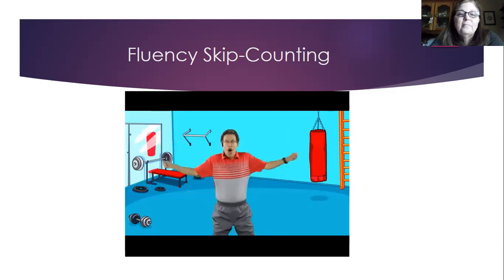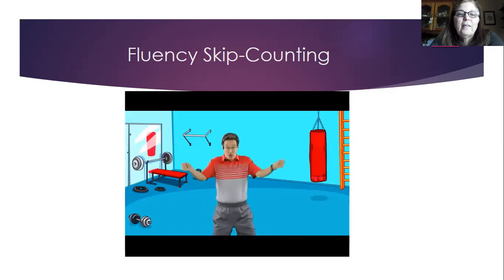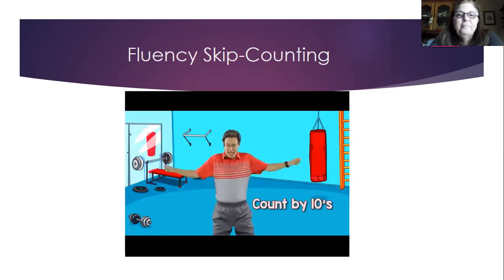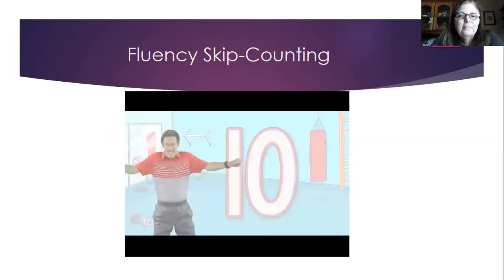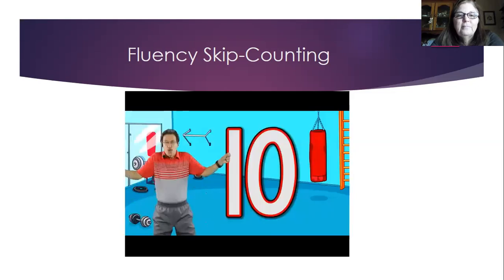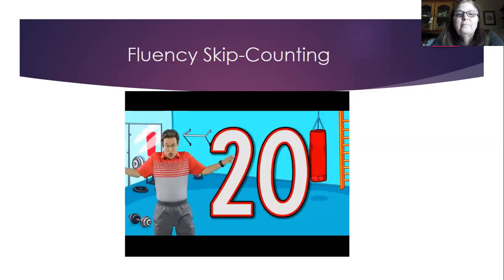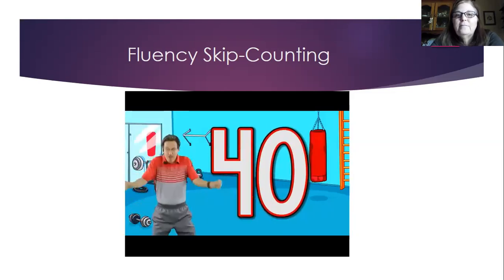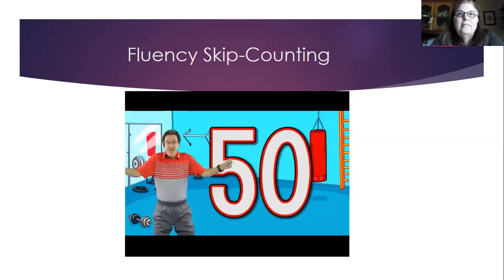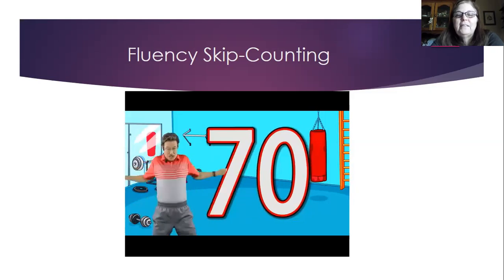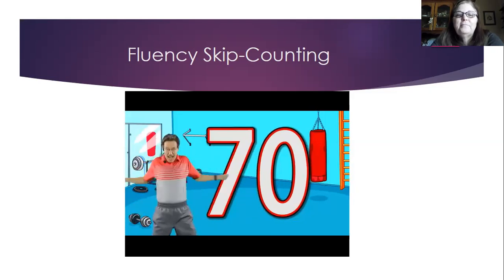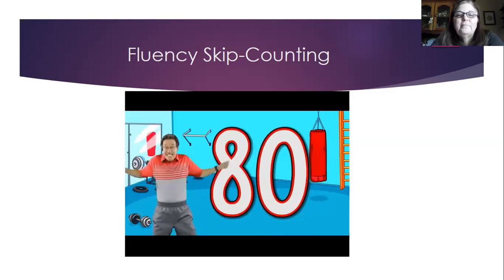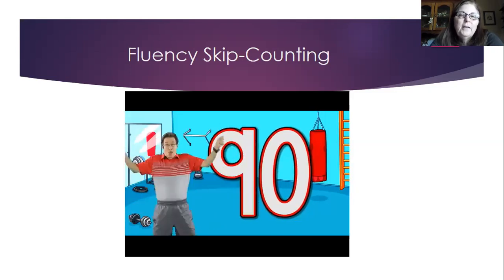Let's do arm circles — forward and backward now. Count by tens, workout and count. Forward: ten, twenty, thirty, forty, fifty. Backward: sixty, seventy, eighty, ninety, one hundred.